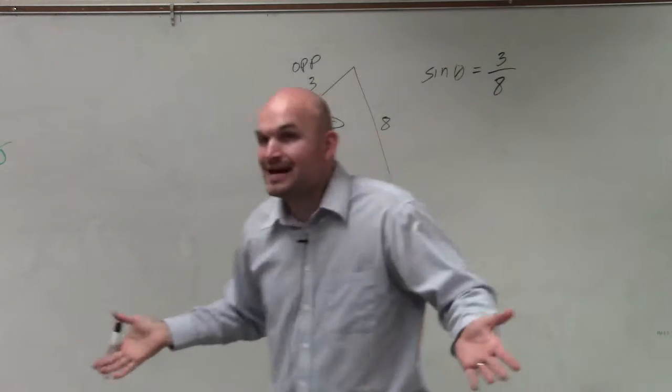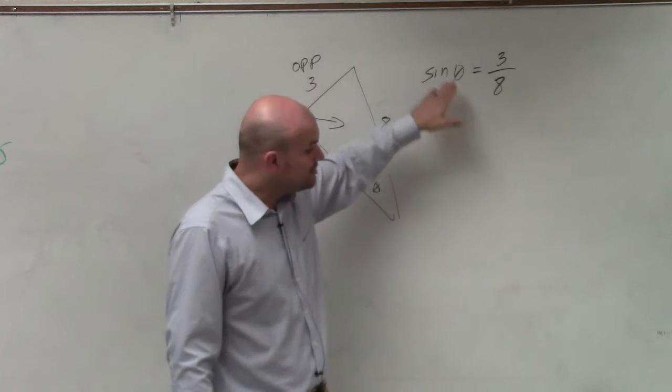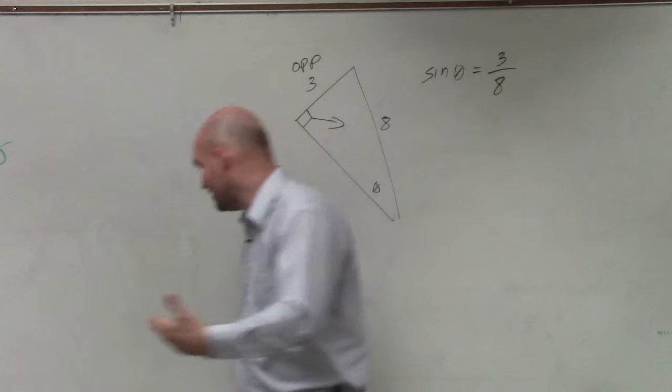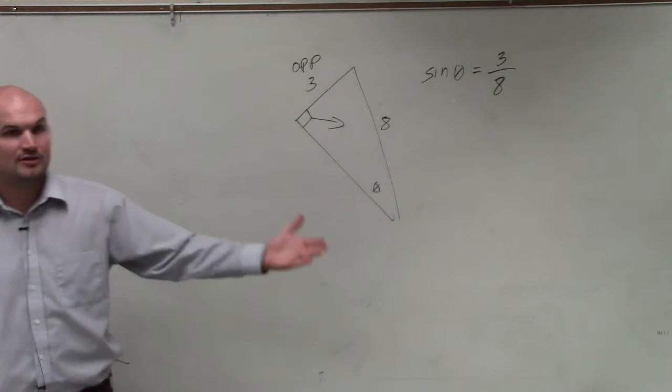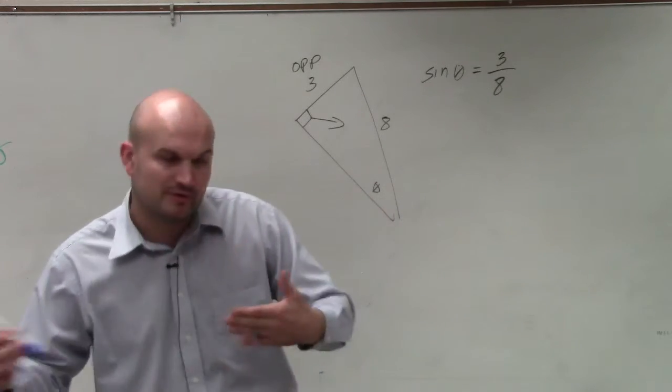But now we need to solve for sine—I'm sorry, we need to solve for theta. We need to undo sine. So the way to undo sine, if you guys remember, the way we undid addition we subtract, right? The way we undid multiplication was to divide. The way we undid squaring was to take the square root.